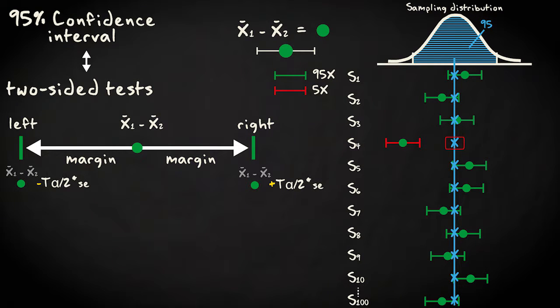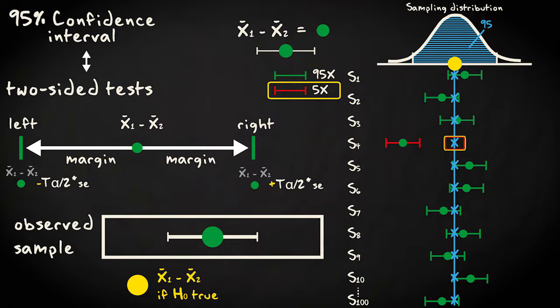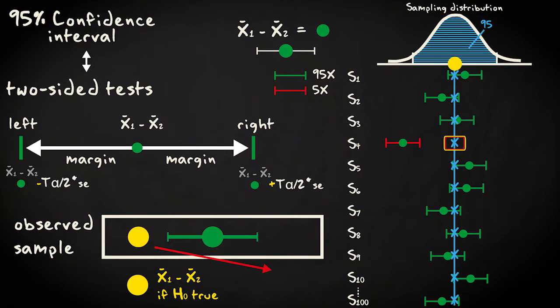Now suppose for a minute that the null hypothesis is true and the population value is the null value. Then this value will lie outside the interval only in 5% of the samples. If in our sample we find the value under the null outside the interval, then it's unlikely that the null value is the true population parameter value. So finding the null value outside the confidence interval corresponds to rejecting the null in a two-sided test.